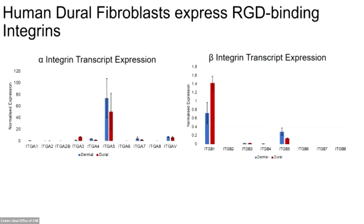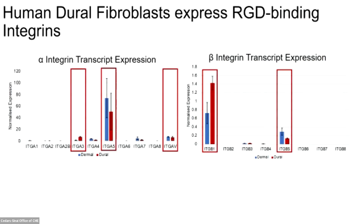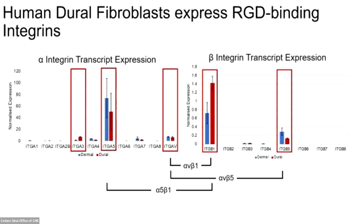A key characteristic of dural fibroblasts for them to bind to RGD domains is the expression of integrins that recognize them. Using qPCR, I've determined that human dural fibroblasts express alpha-V beta-1, alpha-V beta-5, and alpha-5 beta-1, which are all RGD-binding integrins. They also express alpha-3 beta-1, which is not an RGD-binding integrin but has previously been shown to bind to an unknown part of fibrillin 2, which might correspond to our novel TB7 binding site.